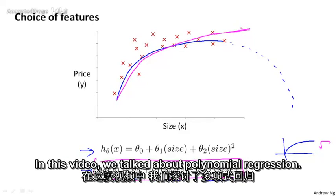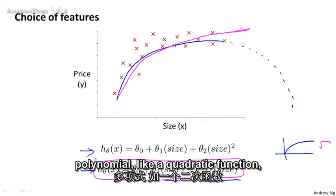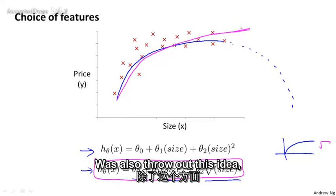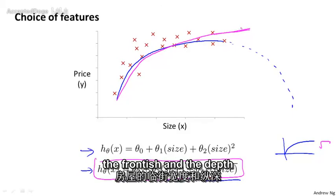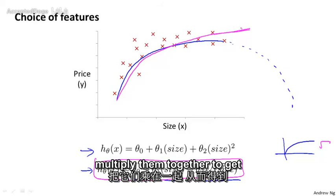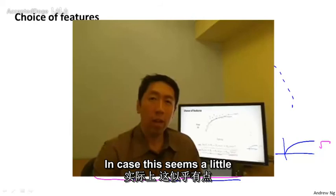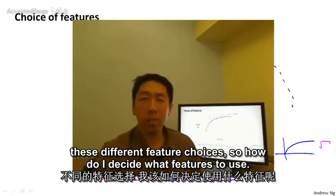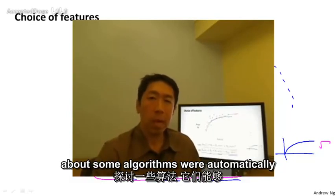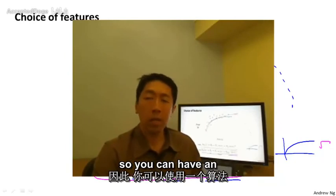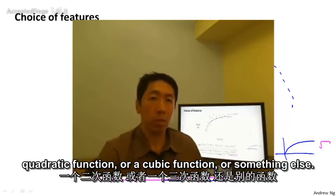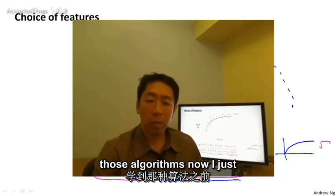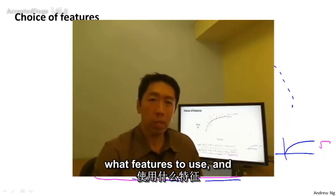In this video, we talked about polynomial regression, that is how to fit a polynomial like a quadratic function or a cubic function to your data. And we talked about this idea that you have a choice in what features to use, such as that instead of using the frontage and the depth of a house, maybe you can multiply them together to get a feature that captures the land area of a house. In case this seems a little bit bewildering that, you know, wow, with all these different feature choices, so how do I decide what features to use? Later in this class, we'll talk about some algorithms for automatically choosing what features to use, so that you can have an algorithm look at the data and automatically choose for you, whether you want to fit a quadratic function or a cubic function or something else. But until we get to those algorithms for now, I just want you to be aware that you have a choice in what features to use.